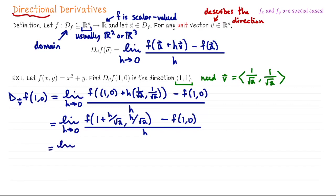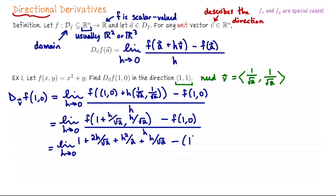Now we can evaluate f to get our numerator. This is going to be the limit as h goes to zero. We need the first coordinate squared: that's 1 plus 2h/√2 plus h²/2. And we add y, so that's plus h/√2. Then subtract off f evaluated at (1, 0), which is minus (1 squared plus 0). That was our numerator, and then we divide everything by h. We see the ones cancel, and after canceling those ones, every remaining term in the numerator can be divided by h.